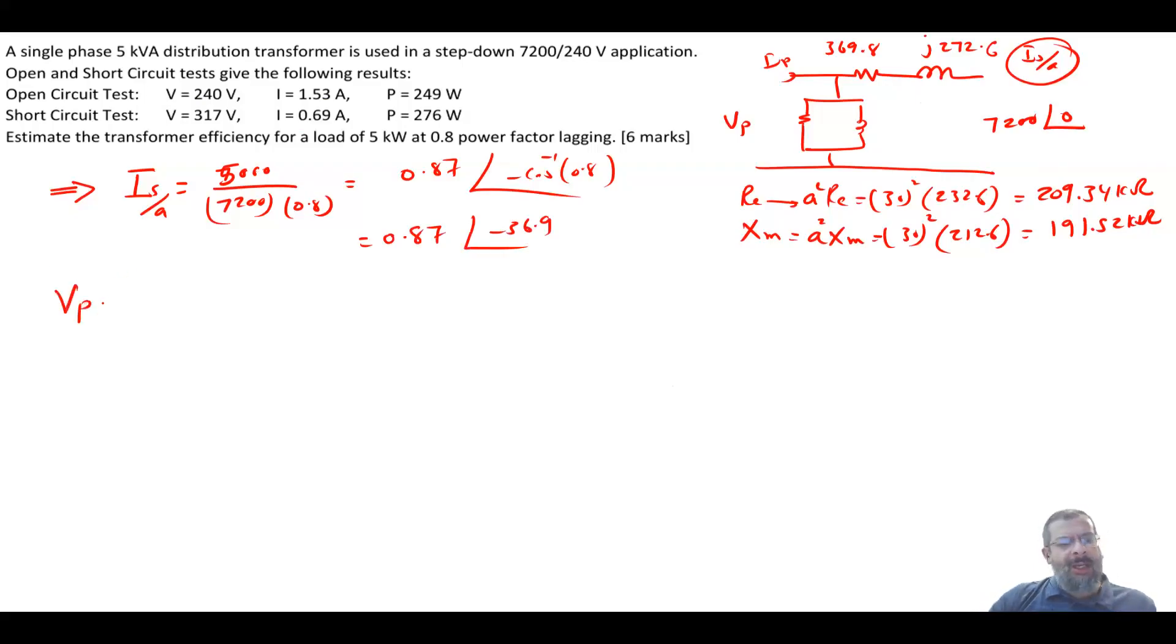Your Vp now, just a KVL, is equal to 7200 angle of 0 plus the current 0.87 angle of minus 36.9 times 369.8 plus J272.6, and this will give me a voltage of 7553.2 angle of minus 0.0254 volt, which is almost 0. These values, because I have to assume a value for the core loss.